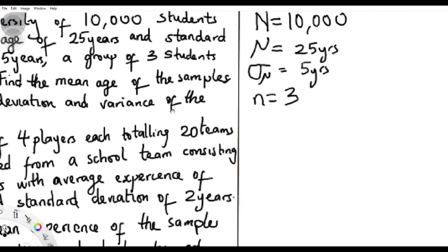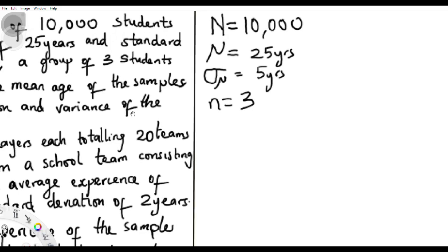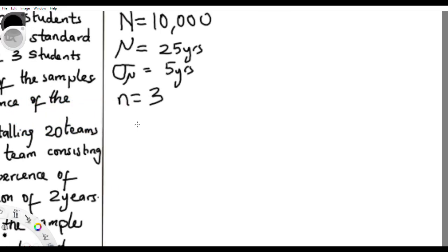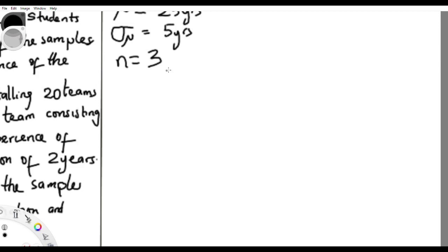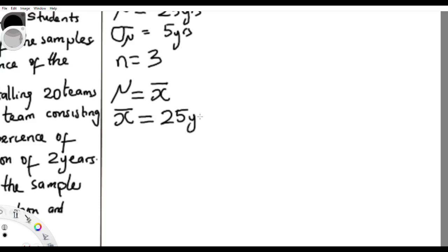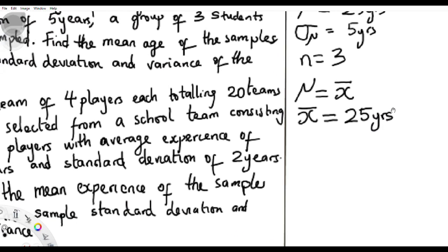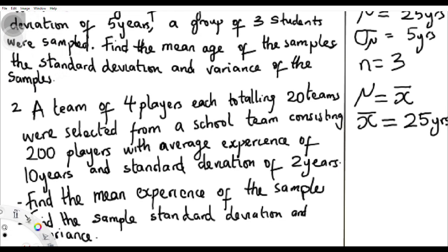Whether it is with replacement or without replacement, sometimes it's stated and sometimes it won't be stated. In this case, whether it is with or without replacement, it doesn't really affect the mean. From theorem one, with or without replacement, the mean for the population should be the same as the mean for the sample. So the mean age for whichever samples they have chosen should also be 25 years.